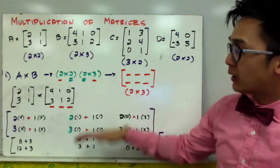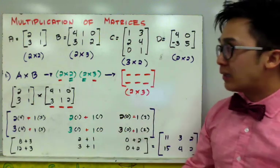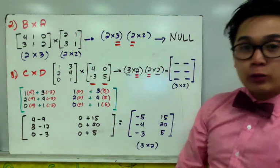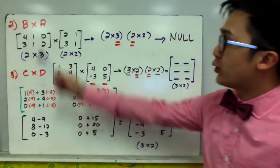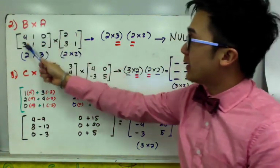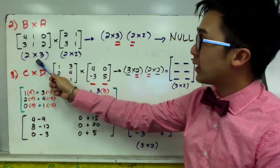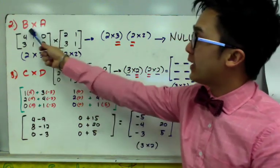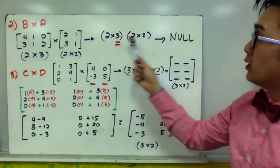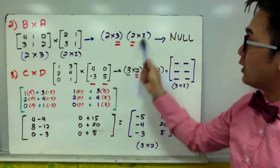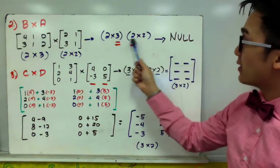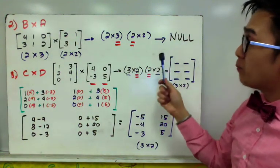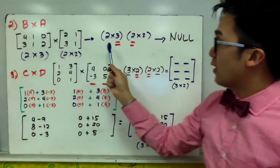The steps are pretty long, but once you get the hang of it, it gets a little bit easier. For the second example, we're going to multiply B times A. Matrix B is a 2 by 3 matrix, and matrix A is a 2 by 2 matrix. Writing their orders side by side, the inner values are not the same, so we can no longer continue. Therefore, B times A is null or empty — it is not possible to multiply matrix B and matrix A.